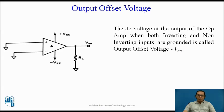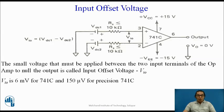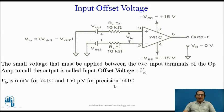The next parameter is called output offset voltage. When both inputs of the Op-Amp are connected to ground, there should be no output voltage. However, even with both inputs grounded, a certain output voltage appears, called the output offset voltage. To nullify this, a small DC input voltage must be applied to either the inverting or non-inverting terminal. That small voltage applied between the two input terminals to make the output offset voltage equal to zero is called the input offset voltage. For the 741C, the input offset voltage is 6 millivolts, and for the precision 741C it is 150 microvolts.